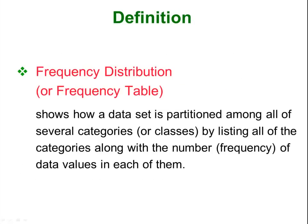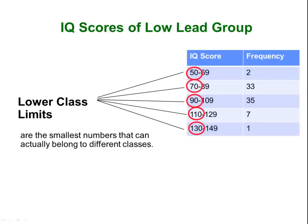A frequency distribution or frequency table is exactly what it sounds like. It is just a table that lists each possible data value, or sometimes a group of data values, and then how often they showed up in your data. Here is a typical example where they collected a bunch of IQ scores and put them in groups, or what are called classes: 50 to 69, 70 to 89, etc. So there were two people in our group that had an IQ between 50 and 69, versus seven people who had one between 110 and 129. That is a frequency distribution table.